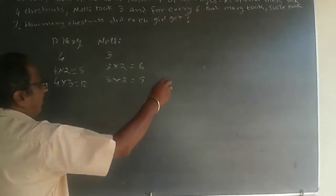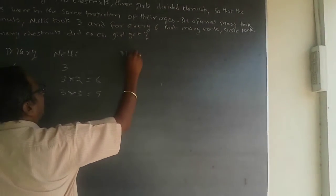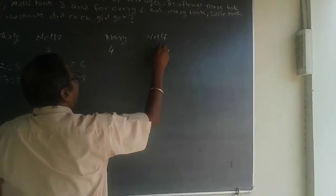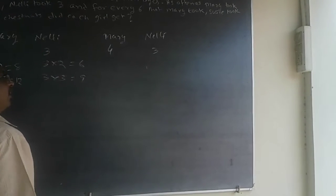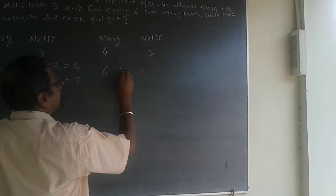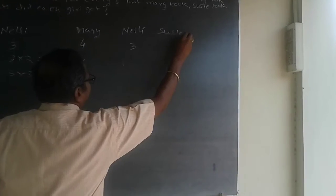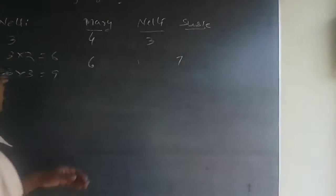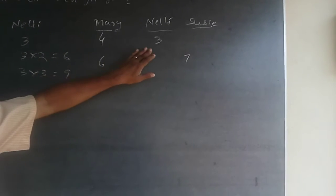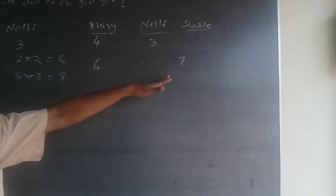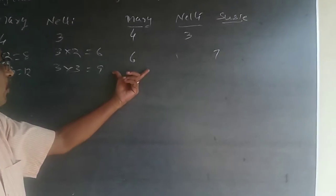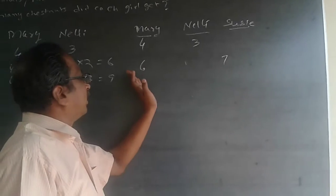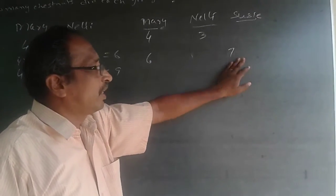What happens is, whenever Mary is taking 4, Nelly is taking 3. Whenever Mary is taking 6, Susie is taking 7. As I explained, if Mary is going to take 6, she will take 7. If she is going to take 6 into 2, she will take 7 into 2.